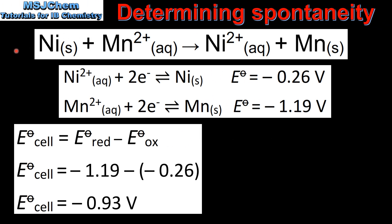Let's look at another example. In this reaction nickel is oxidized to form nickel 2+ ions and manganese 2+ ions are reduced to form manganese metal. Here we have the values for the standard reduction potentials as seen in the data booklet.